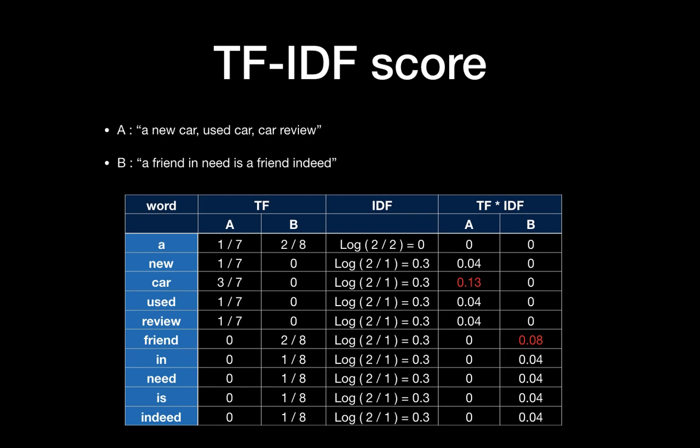Looking at the chart for Documents A and B: for Document A ('a new car used car car review'), the most informative word is 'car' with a TF-IDF score of 0.13. For Document B, 'friend' is the most informative word with a score of 0.08. Notably, 'a' scores zero in TF-IDF, whereas previously its TF score was the same as 'friend.' By using TF-IDF, you lower the score of frequent words that are not relevant to a specific document.